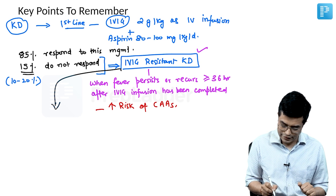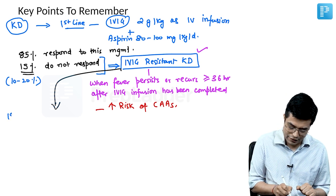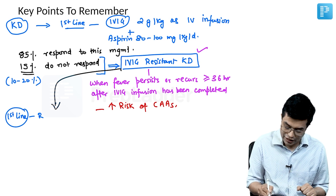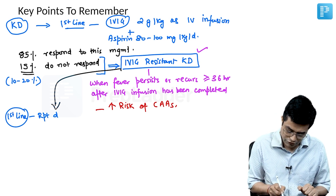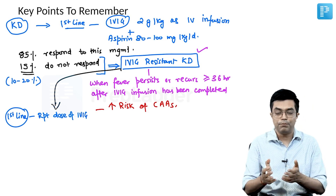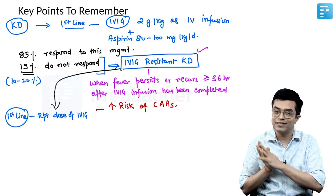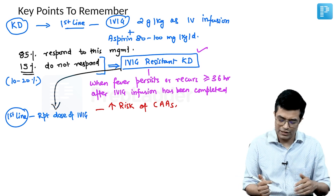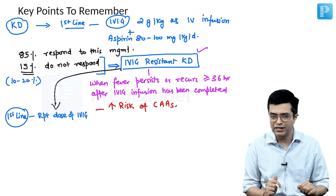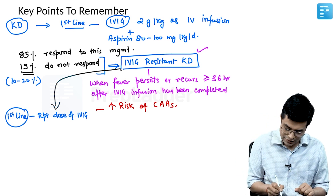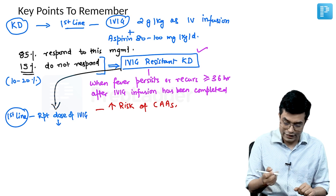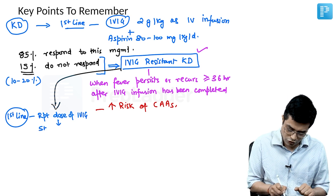Whenever you have IVIG-resistant KD, the first-line therapy is to repeat the dose of IVIG. Up to 45 to 50 percent can still have a failure to this regimen as well, but repeating the dose of IVIG will be needed — it takes about 10 to 12 hours. If the fever is still persisting after that, you give a trial of a short course of corticosteroids.